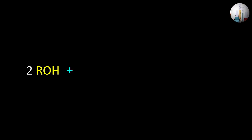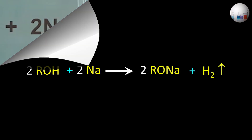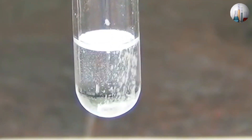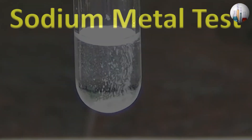Alcohols react with active metals like sodium to produce sodium alkoxide and effervescence of hydrogen gas. That was the sodium metal test.